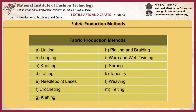The popular methods of fabric production are: linking, looping, knotting, tatting, needle point laces, crocheting, knitting, plaiting, braiding, warp and weft twining, sprang, tapestry, weaving and felting.